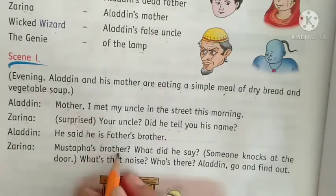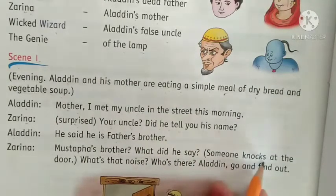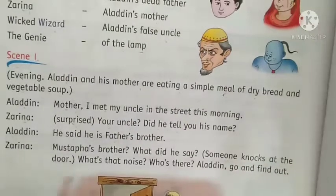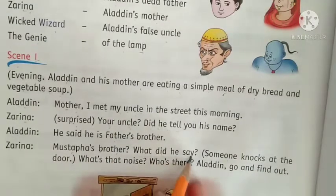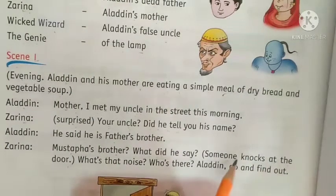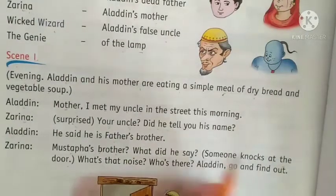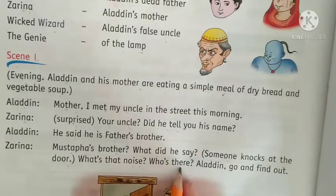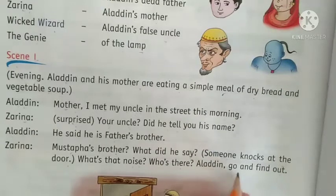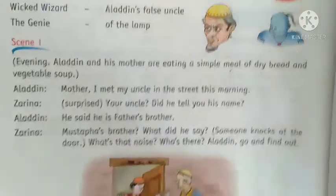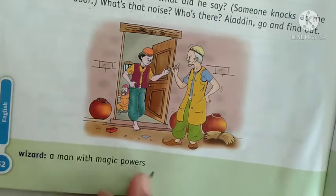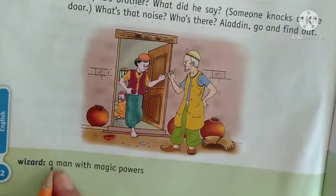Zarina says: 'Mustafa's brother? What did he say?' Someone knocks at the door. 'What's that noise? Who's there? Aladdin, go and find out.' Wizard — wizard means a man with magic powers. Wizard ka meaning kya hota hai? Jadugar. Okay. Now pay attention on the next page.